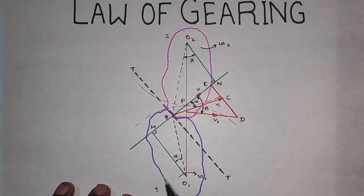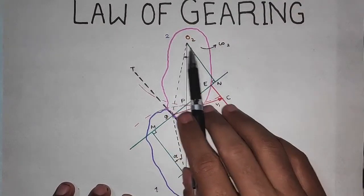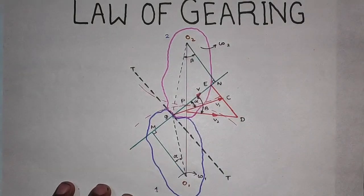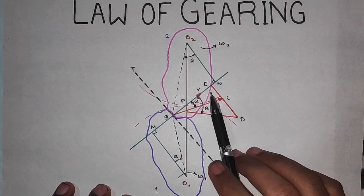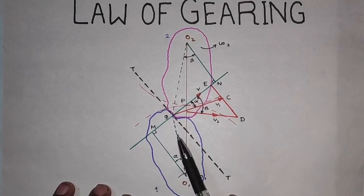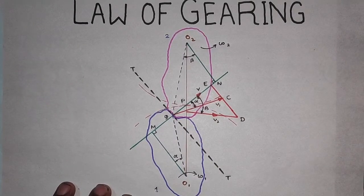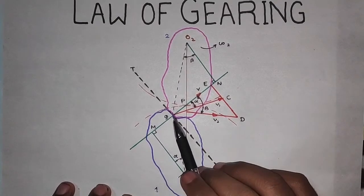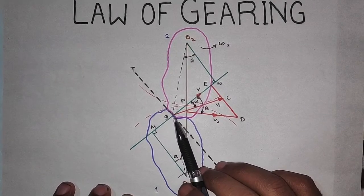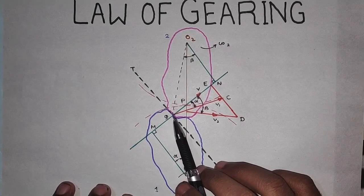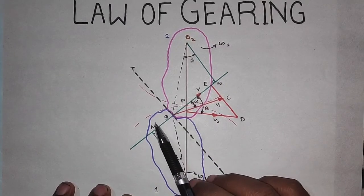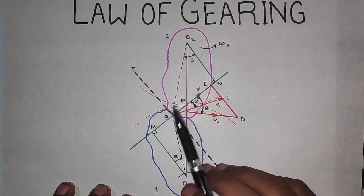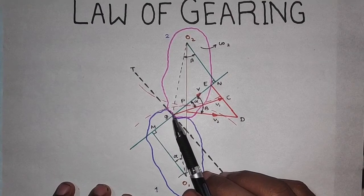Wheel one rotates in the clockwise direction, whereas wheel two rotates in the counterclockwise direction. Let the line TT be the common tangent and the line MN be the common normal to the curves at point Q, which is the point of contact — that is, where the teeth of either of the gears meet.